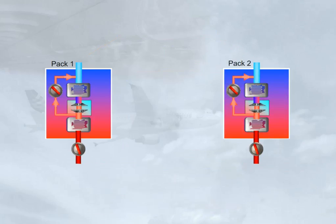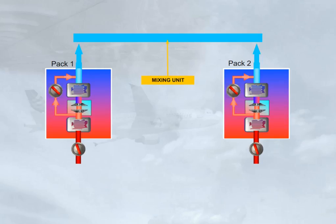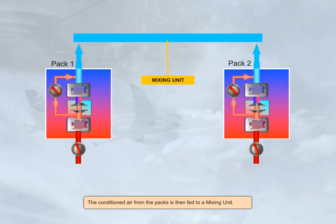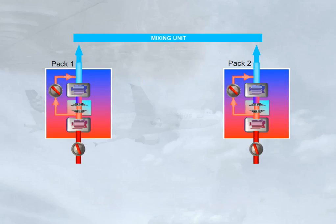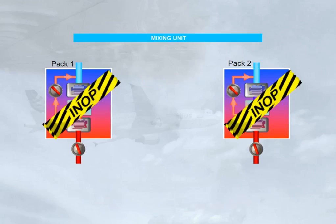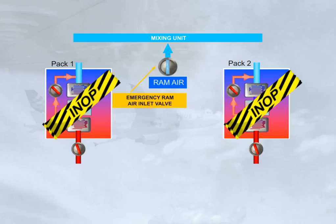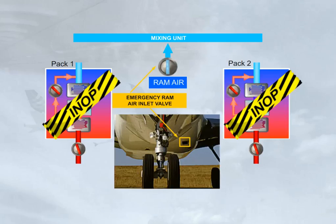The conditioned air from the packs is then fed to a mixing unit. In case of failure of both packs, RAM air is provided via an emergency RAM air valve. We will look at the use of RAM air in the failure cases module.